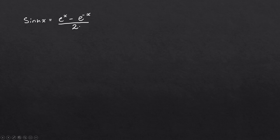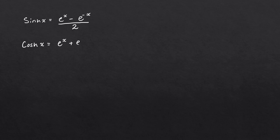And then for cosh x — hyperbolic cosine — let's write this exponential definition out. It's very familiar to sinh x. The only thing that changes is instead of a minus, this becomes a plus. So this is e to the x plus e to the minus x, all over 2.